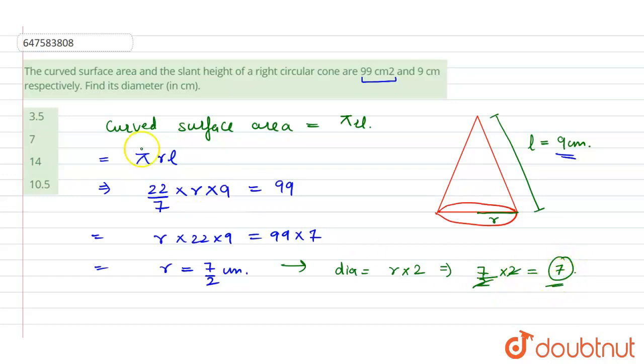7 is left. So, 7 is the diameter of this cone. That means option 2 is correct. Thank you.